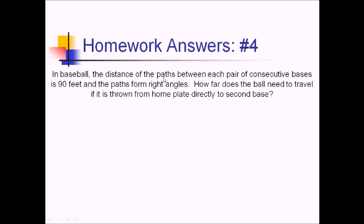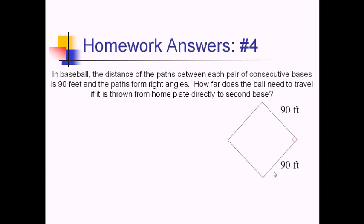For number four, in baseball the distance between each pair of consecutive bases is 90 feet, and the paths form right angles. How far does the ball need to travel if it's thrown from home plate directly to second base? It helps to have a picture. Here is your standard baseball diamond with four bases: home plate at the bottom, first base, second base, third base. We said we had right angles between the paths and each path is 90 feet. We're trying to figure out the distance from home plate all the way to second base. Since we've got a right triangle, we can use Pythagorean theorem.